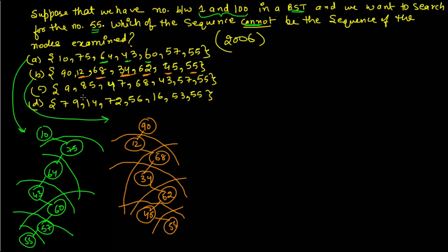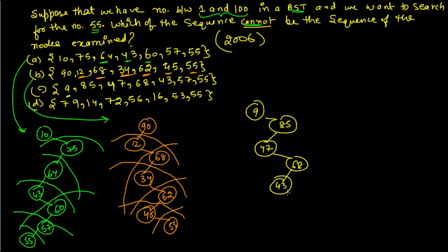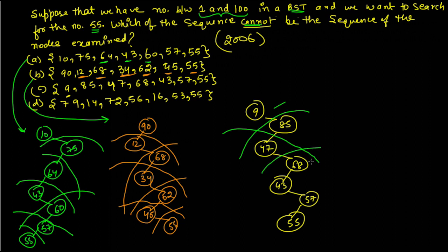Option C contains the sequence: 99, 85, 47, 68, 43, 57, 55. In the right subtree of 47, all data must be greater than 47, but 43 appears there and 43 is less than 47. Therefore this is not a valid search sequence and option C is the wrong sequence.